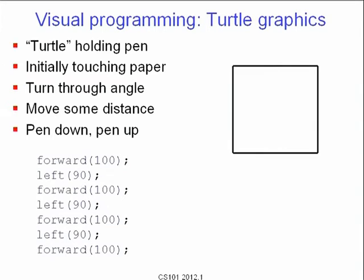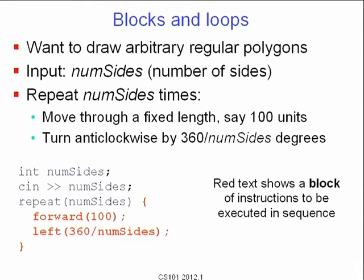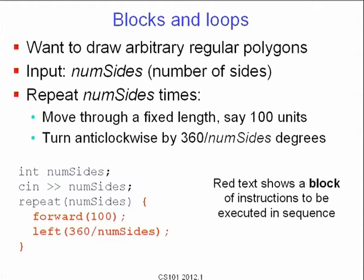To draw a square we had to give four instructions repetitively, which is repetitive and boring. You can use blocks and loops. If you want to draw an arbitrary regular polygon, the input is the number of sides, and the recipe is: repeat num_sides times, moving a fixed length of 100 and turning anticlockwise through 360 divided by num_sides degrees. We assume 360 can be divided uniformly by num_sides; if not, we'll get some weird shape. What will happen if 360 cannot be divided evenly by num_sides? At the end it won't meet up — you might regard this as an integer division issue. Let me give you a quick demo of what you can do with turtle graphics.